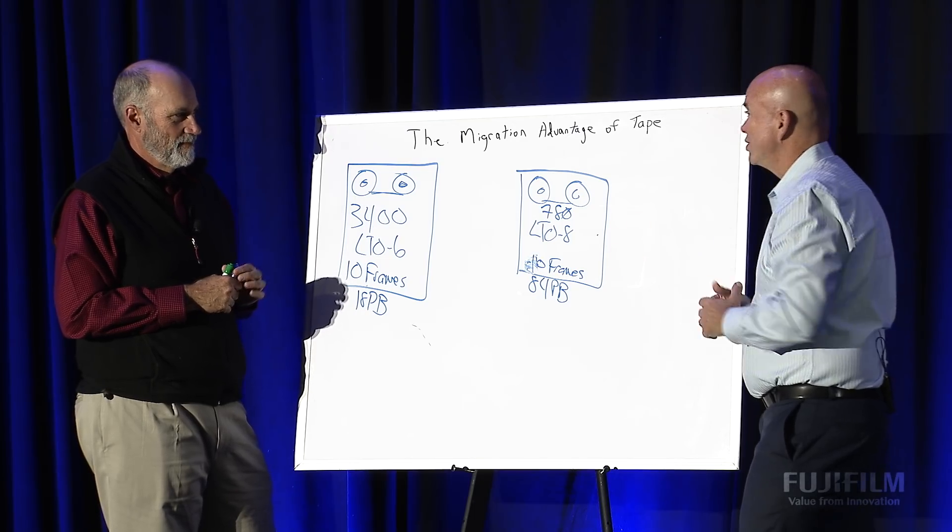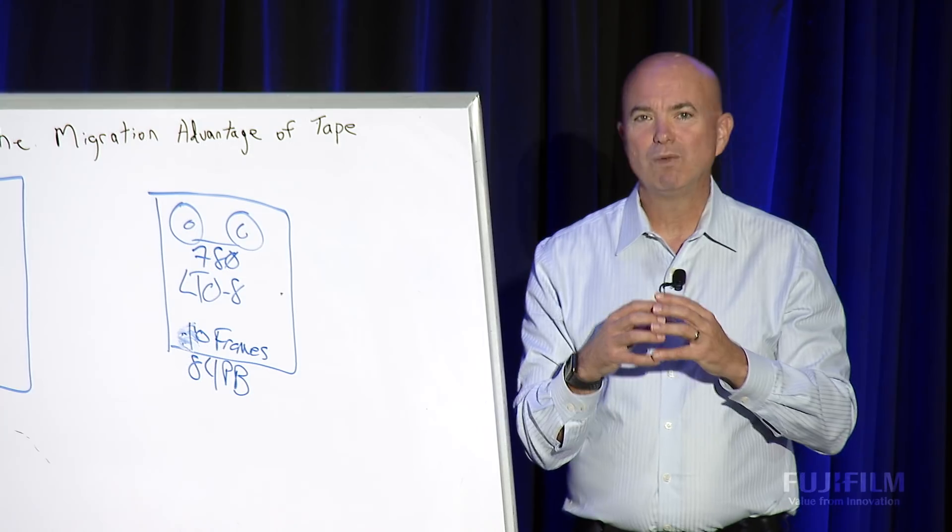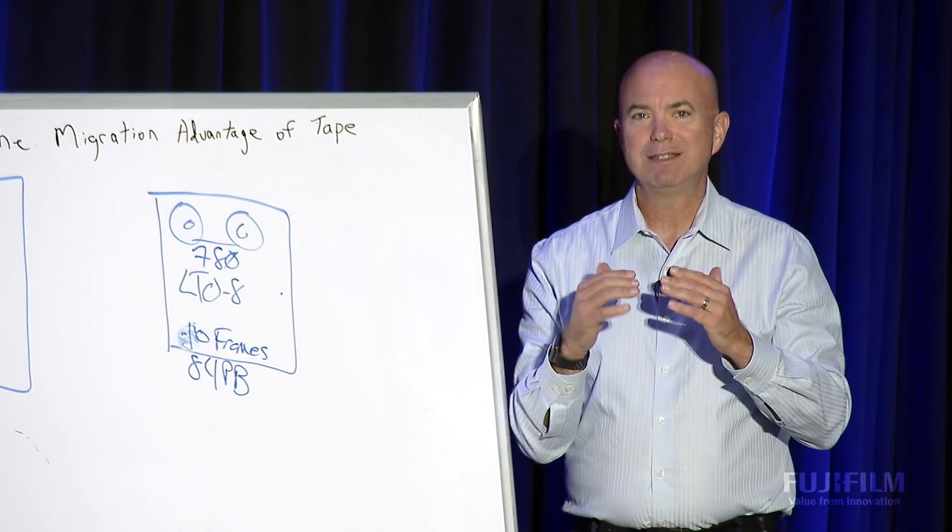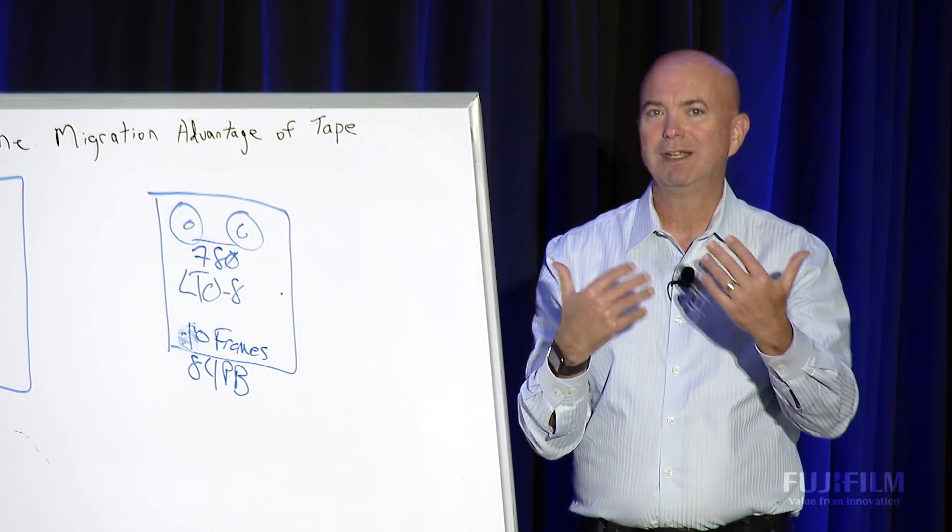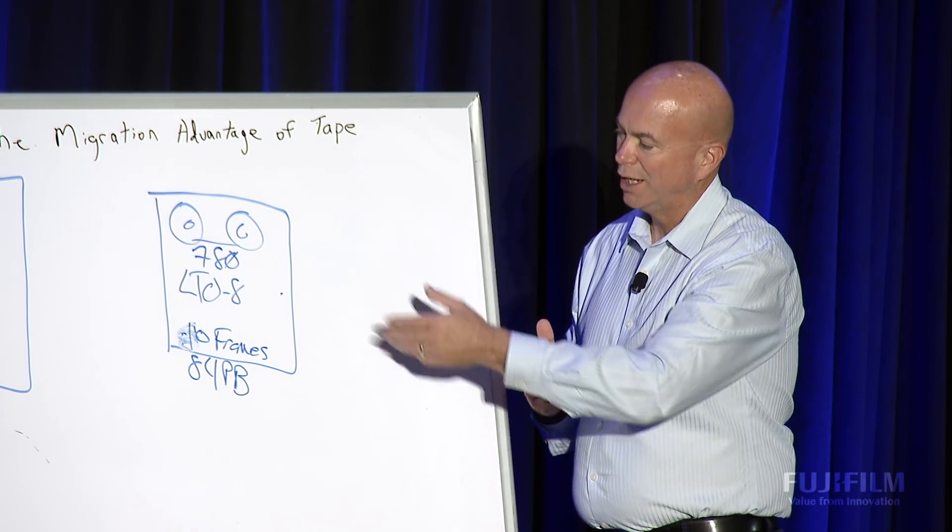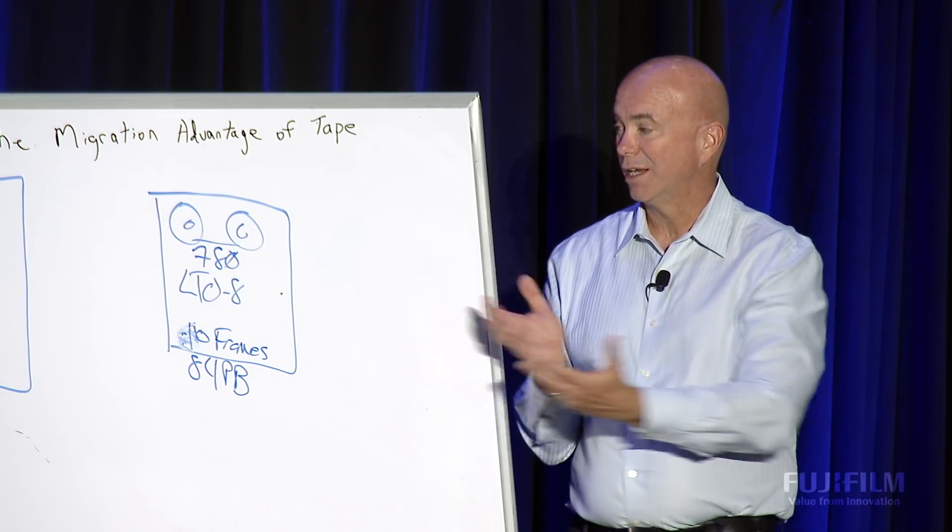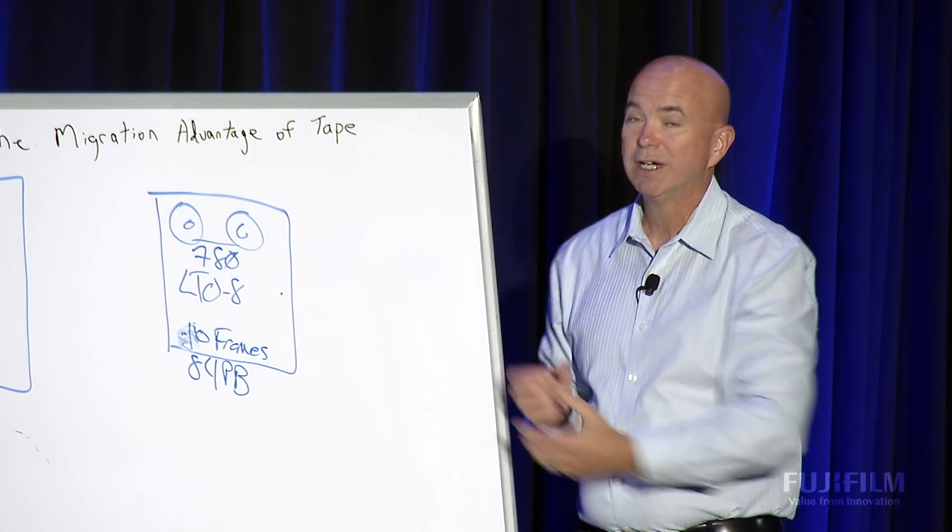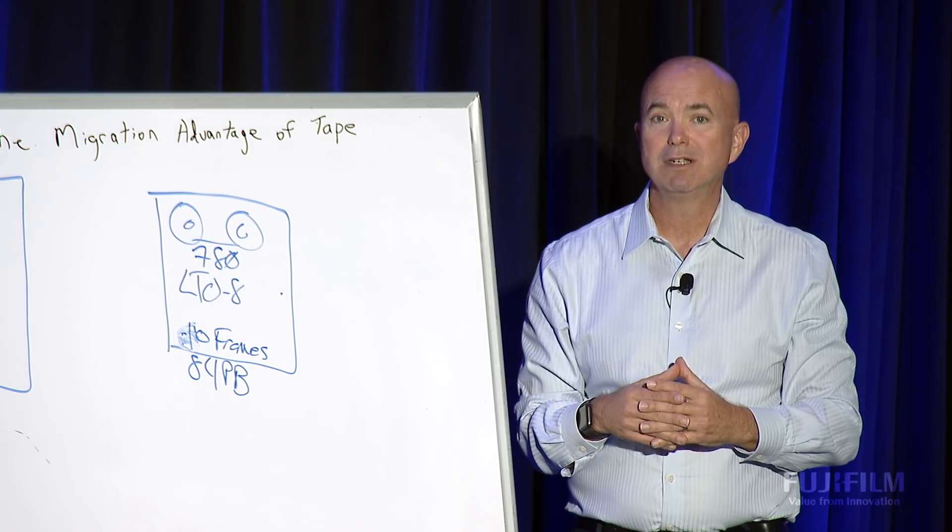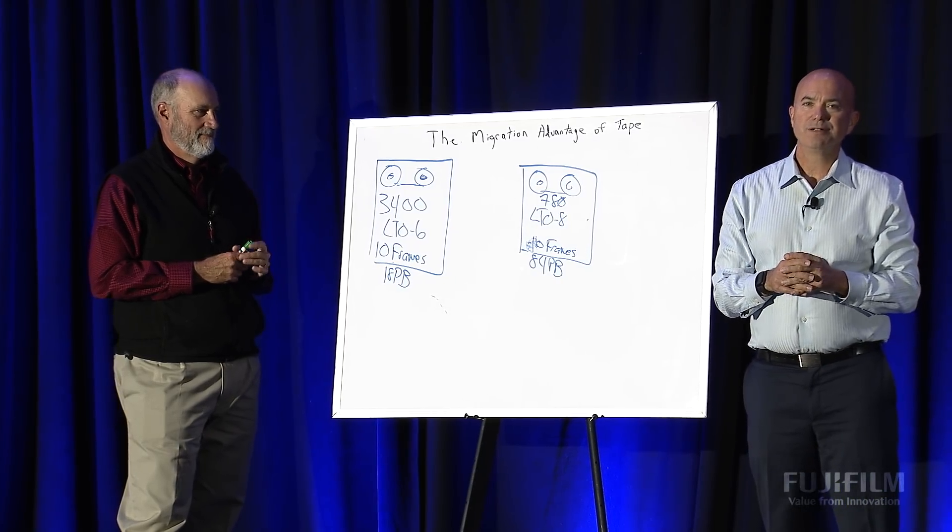All right. Well, Alan, thanks for joining us today. Great. Perfect. Thank you. You're welcome. So there you have it again. One of the big advantages of tape is as the generations continue to advance and they get faster and more dense, you can do things like reduce from 3,400 tapes to 780 tapes. I mean, that's a huge savings and gives, in the case of NOAA, a huge opportunity for continued expansion. Thanks for joining us. I'm George Crump, lead analyst for storage Switzerland.